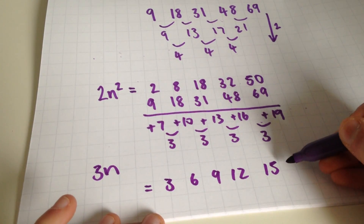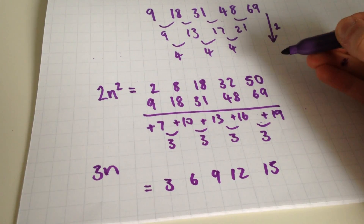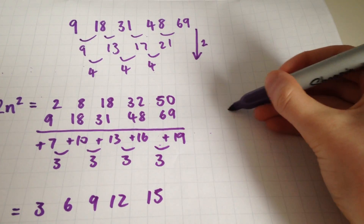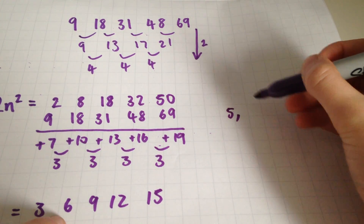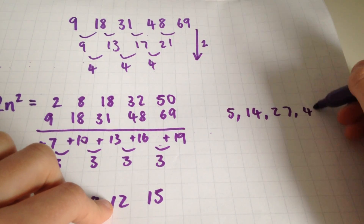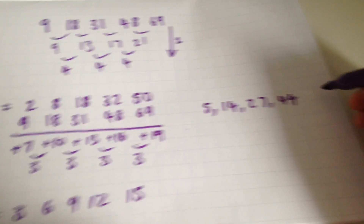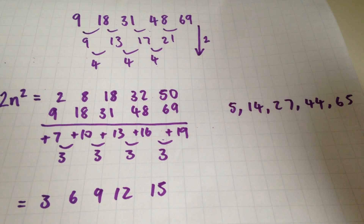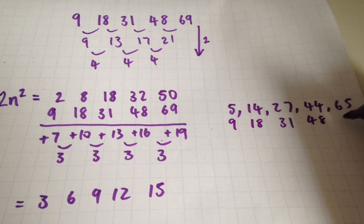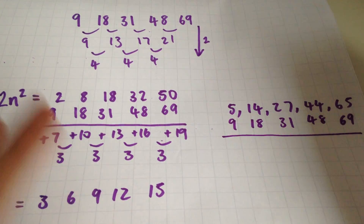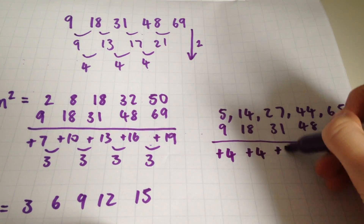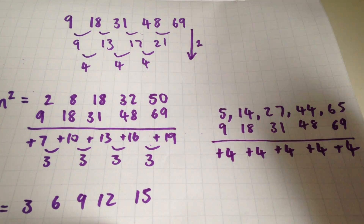Now if we add the 3n sequence to the 2n squared sequence, we'll get what we've got so far. So 2 plus 3 is 5, 8 plus 6 is 14, 18 plus 9 is 27, 32 plus 12 is 44 and 50 plus 15 is 65. Now we write out the original sequence underneath like we have been doing, and find out what the difference is to finish this all. So 5 to 9 is plus 4, 14 to 18 is plus 4, plus 4, plus 4, plus 4 — brilliant.